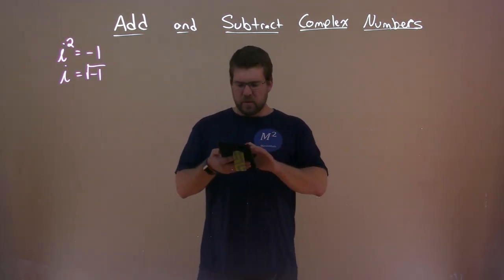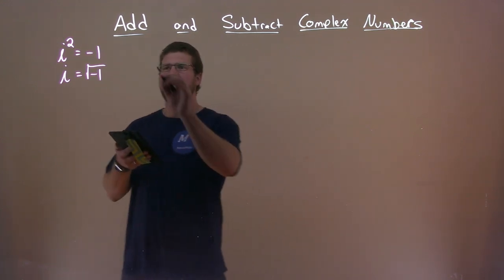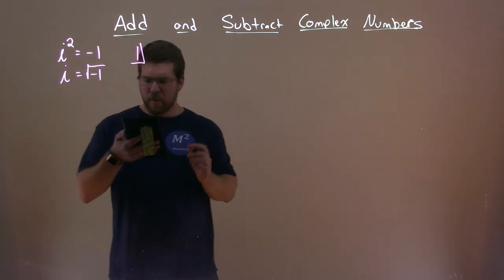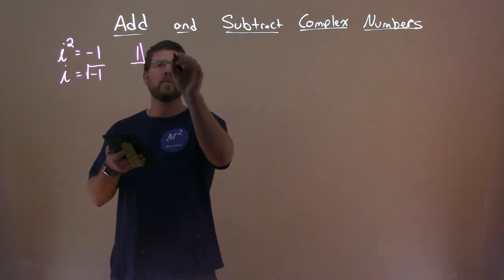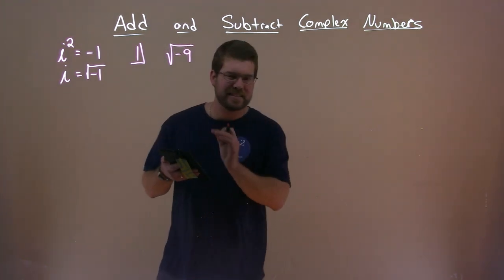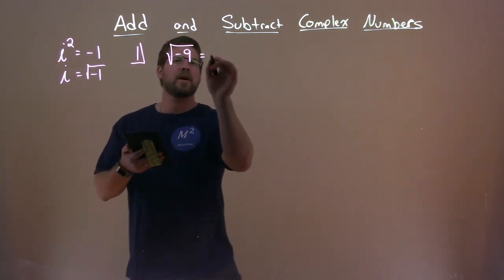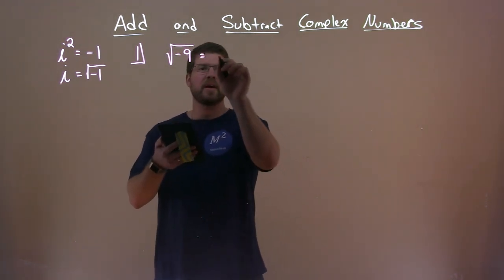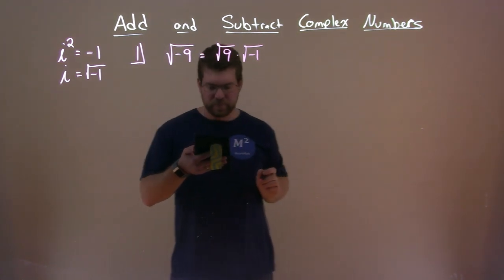All right, so what can we do here? Let's write this for our first example here. I'm going to write this number in standard form. So we want to express the square root of negative 9 in standard form. Well, we know the square root of negative 9 is the same thing as the square root of 9 times the square root of negative 1.